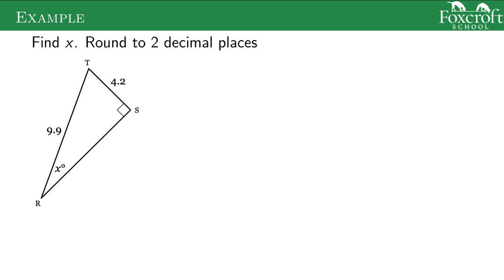I'll do one more example. We're looking for this x. We're going to label our sides: hypotenuse, opposite, adjacent. Real quickly, because it's similar to the last one, you should know that if I have the opposite and hypotenuse, it makes sense to use sine.